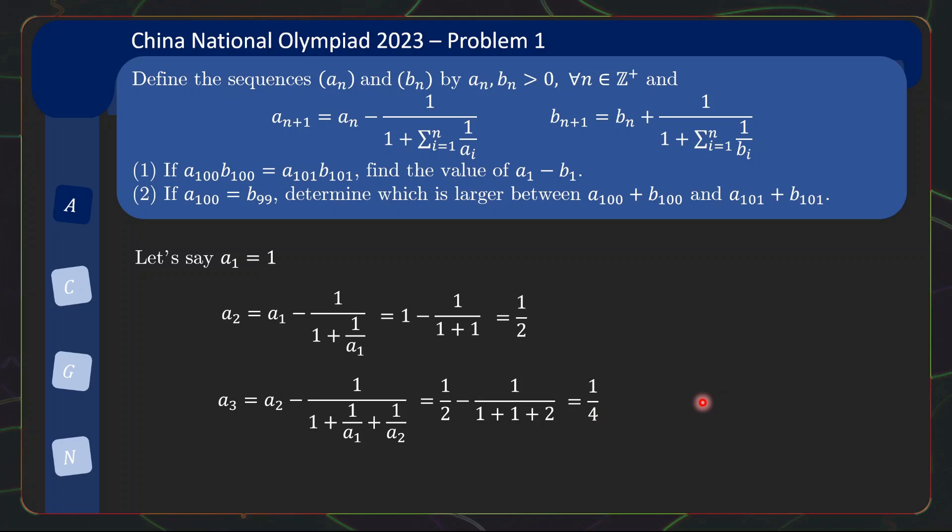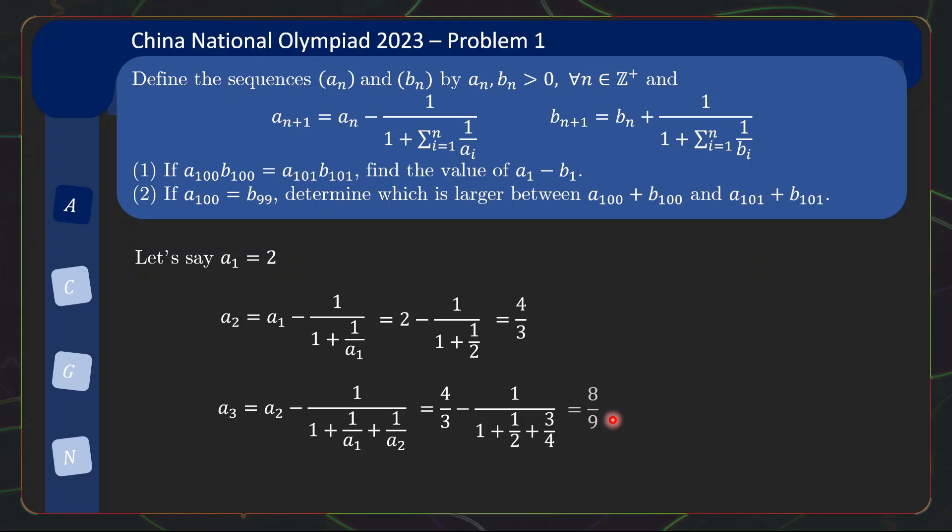Maybe you haven't developed enough comfort yet, but not to worry. Usually what I would do is work out another example. Let's say a1 equals 2. In this case, we have a2 is a1 minus 1 over 1 plus reciprocal, equals 2 minus 1 over 1 plus reciprocal of 2. If you work out the math, it's 4 thirds. a3 is a2 minus 1 over 1 plus the sum of the previous reciprocals, which equals 8 ninths. If you recall in the previous example, we have 1, half, then 1 quarter. And now we have 2, and 4 thirds, which is 2 thirds of the previous term, and 8 ninths, which is 2 thirds of the previous term.